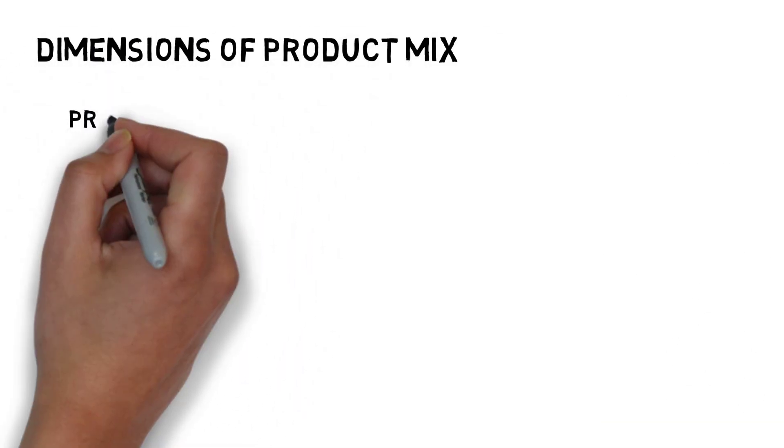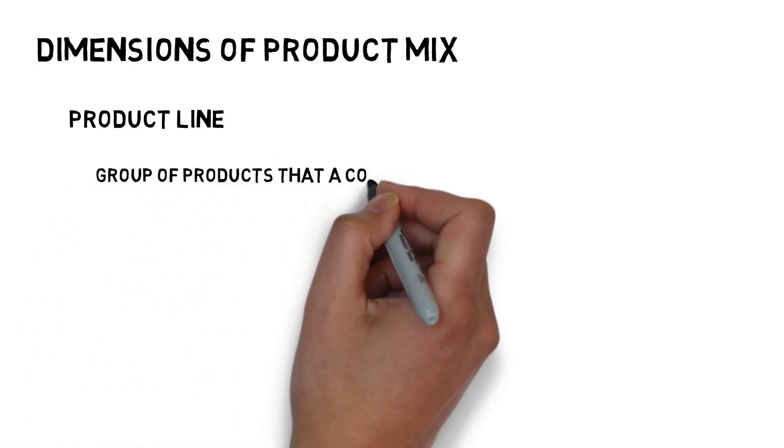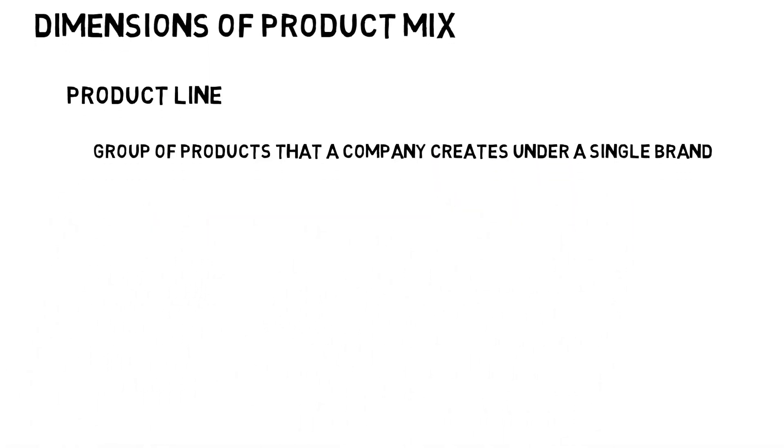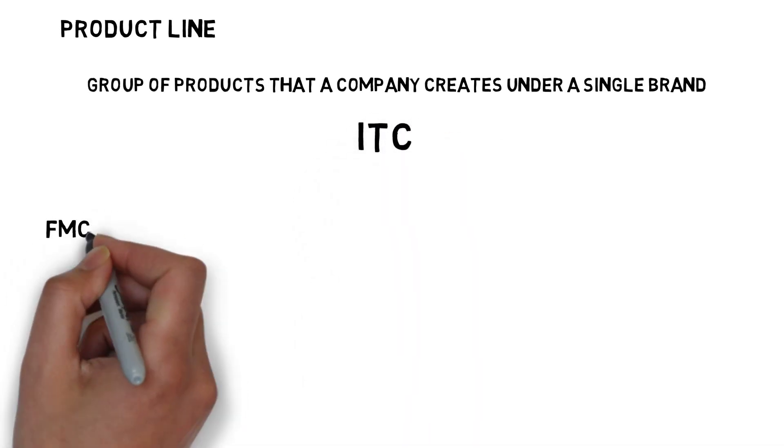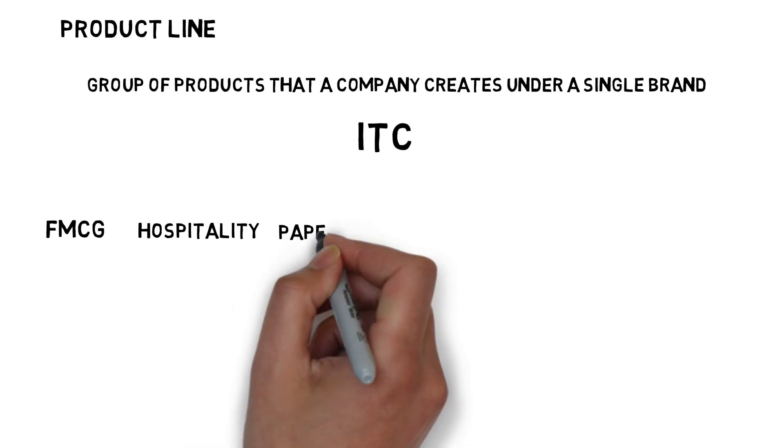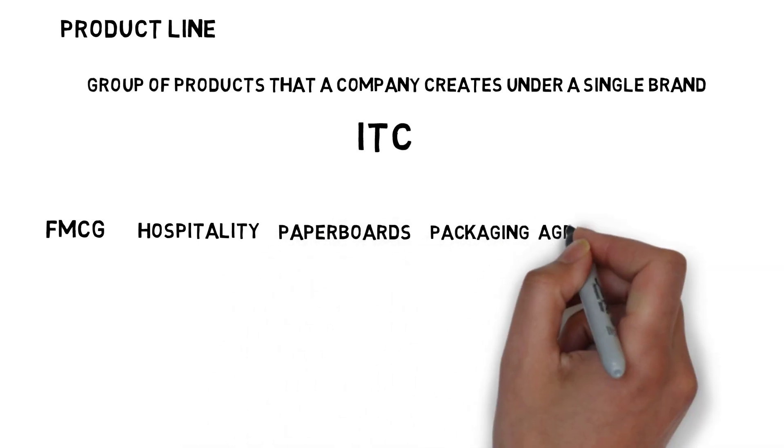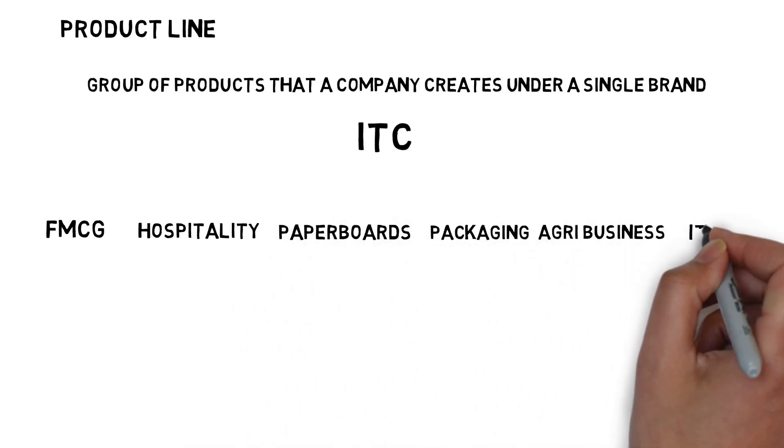Next, dimensions of a product mix. In that, product line. A product line is a group of products that a company creates under a single brand. Let's take ITC. It has many product lines such as FMCG, hospitality, paperboards, packaging, agribusiness, and information technology.